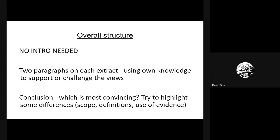For Year 13 students who've done coursework, this is a bit like Section C where you're thinking about why do they differ. One extract might be defining revolution in one way and the second in another — try to bring that into the conclusion, weighing them up and saying which is most convincing and why they differ. That's what you need to do to get to Level 5.